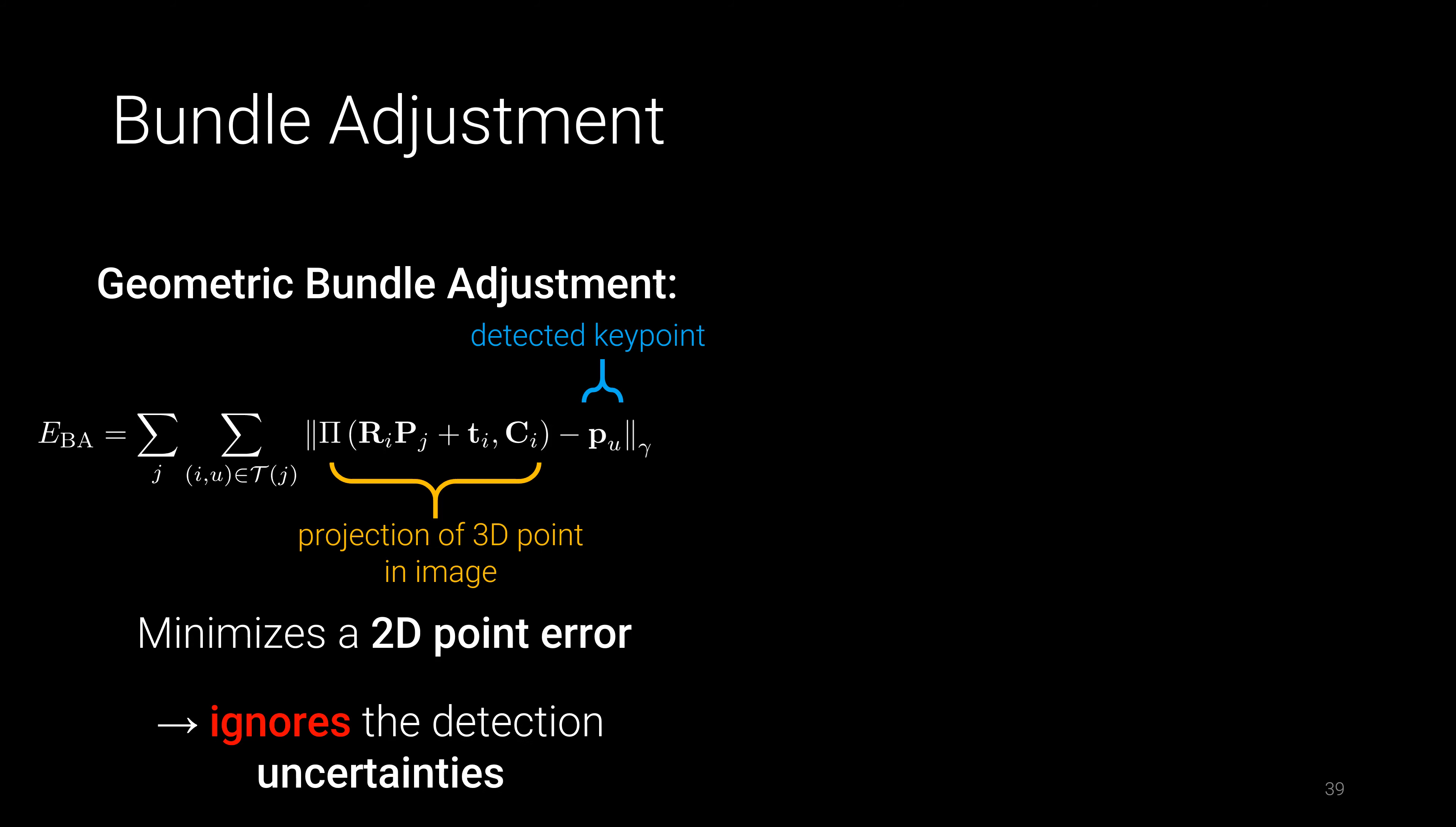The second proposed refinement is in bundle adjustment. In classic SFM, one usually minimizes the geometric reprojection error between the projection of a 3D point in an image and the corresponding keypoint location. While this global adjustment is robust to outliers, it does not use any appearance information.